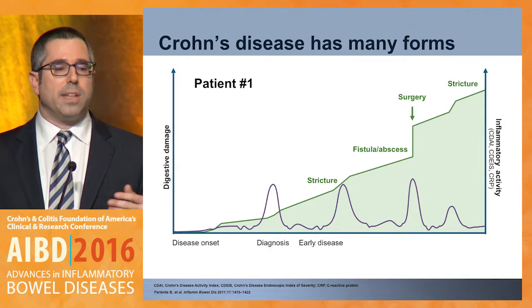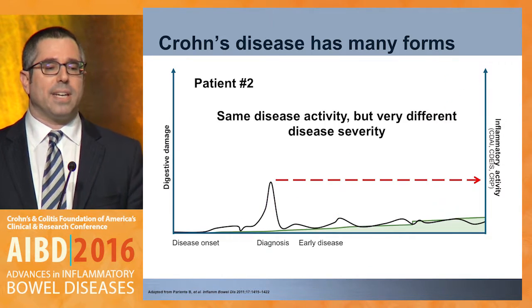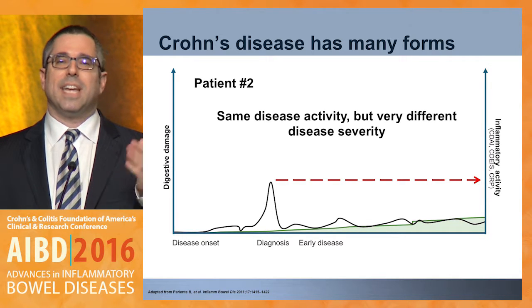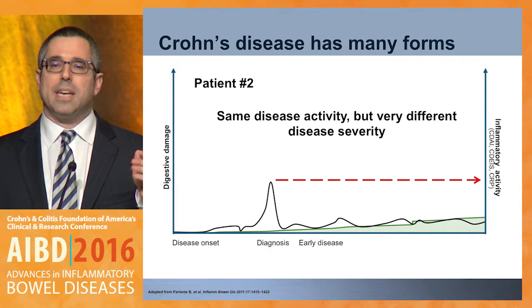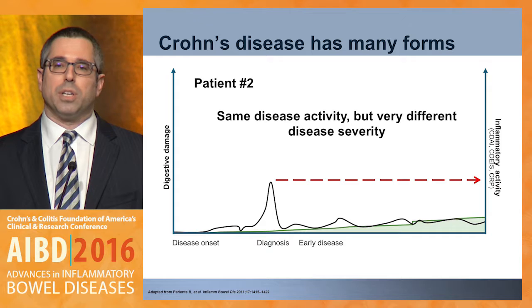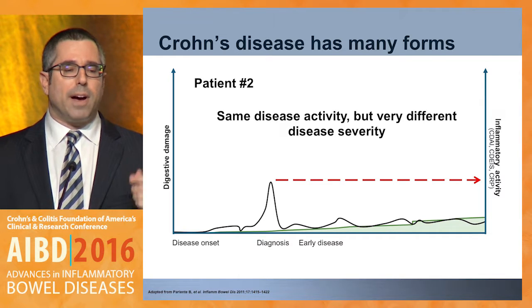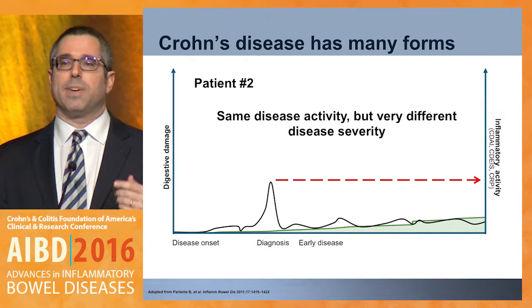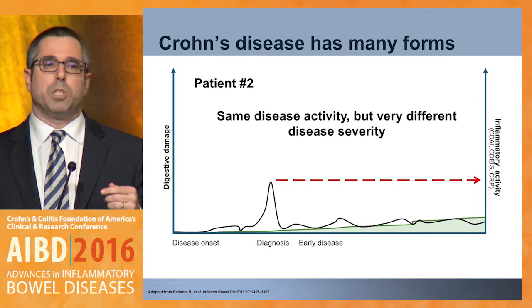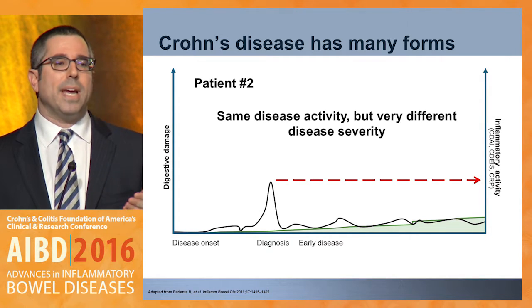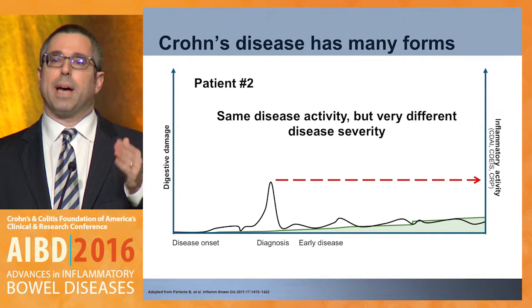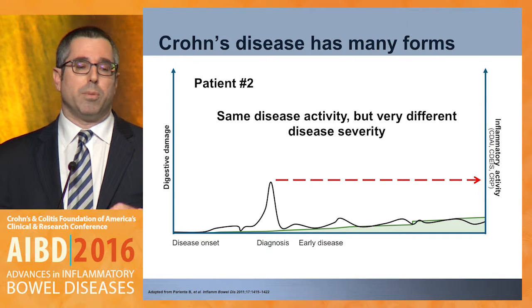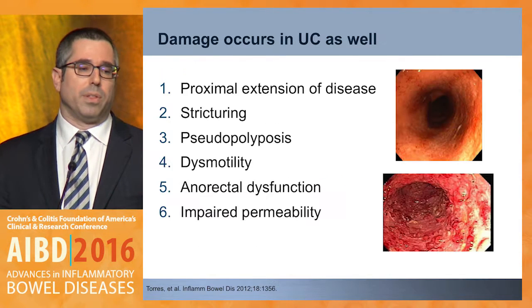For a second patient, you could say their disease activity at some point was exactly the same — their CDAI score may have been exactly the same as that other patient at that moment in time. But following that patient over time, they have a very different disease severity, and we should be thinking about that patient in very different ways — not what we're doing today, but what we're going to do to maintain their health in the future.